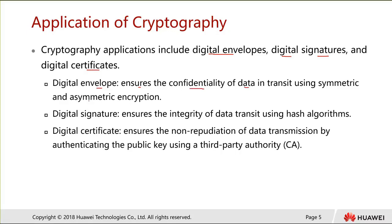A digital envelope is about how you encrypt and decrypt information — it can be symmetric or asymmetric. Symmetric means both parties share the same key to encrypt and decrypt. Asymmetric, like public key infrastructure, means if A wants to send to B, A uses B's public key to encrypt, and B uses his private key to decrypt.